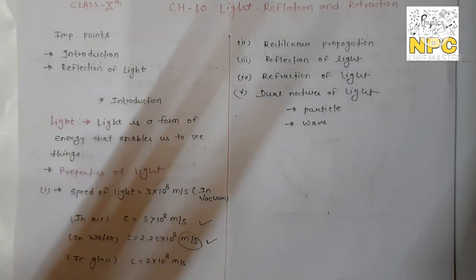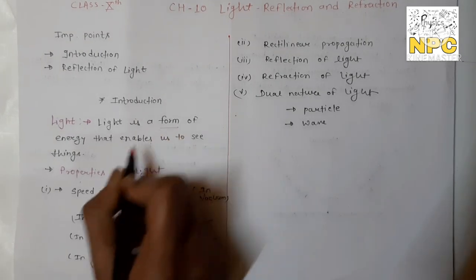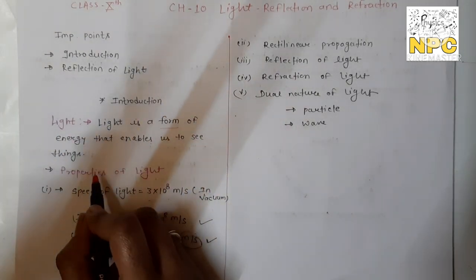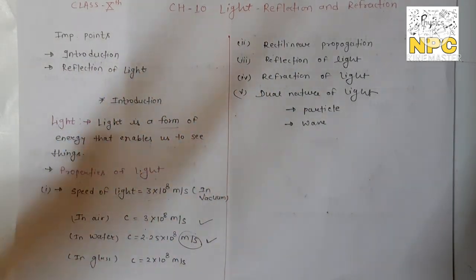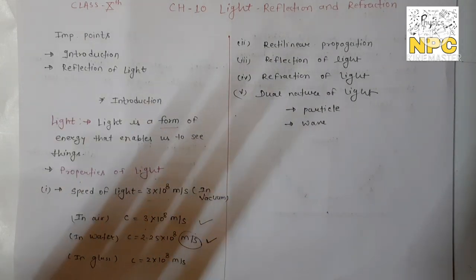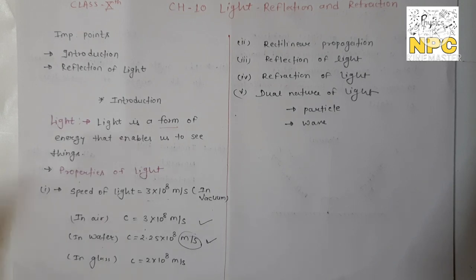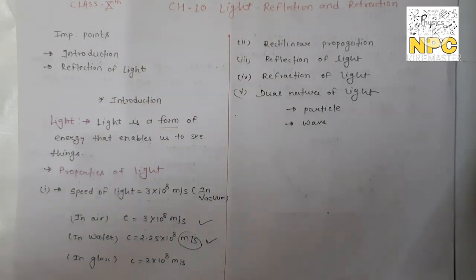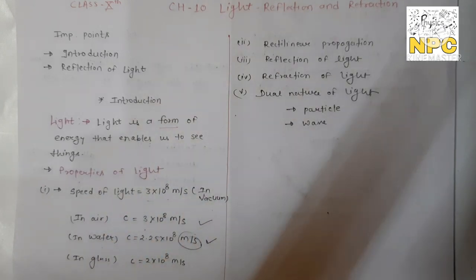We can understand that light is a form of energy that enables us to see anything. Light energy is a type of energy, similar to electrical energy or mechanical energy. These are the properties we will talk about.